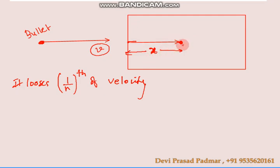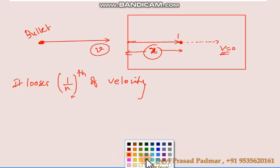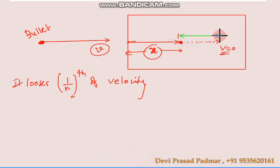Is all the velocity lost? No — only 1/n of velocity is lost. That means even after traveling distance x inside the target, it still has some velocity. It will start moving forward again and after a certain time it comes to rest. So from here to here the distance is x. After losing 1/n of its velocity, how much further distance can it cover? That value d is what we need to calculate.